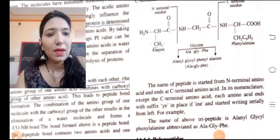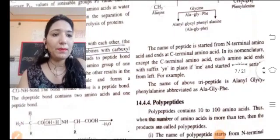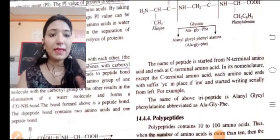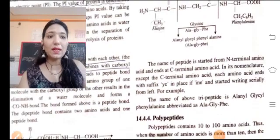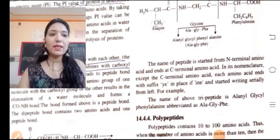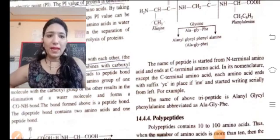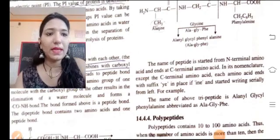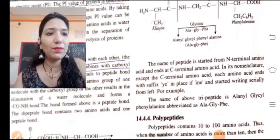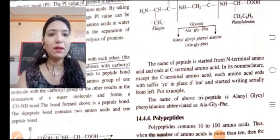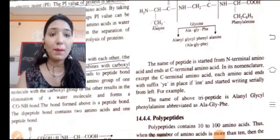For example, the name of above tripeptide is alanyl glycyl glycine. It was glycine, then it was I-N-E and Y-E. Then glycine, alanine, glycine, and phenyl. It was alanine, glycine, and phenyl.